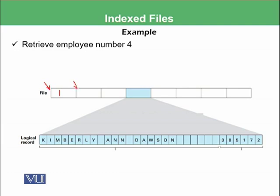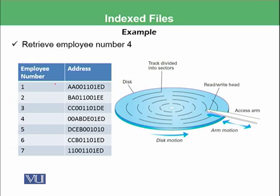We want the starting address of where each record is stored. If we consider that all characters take 1 byte, and the first address starts at 1, then the next employee starts at 32, the next at 63, and so on. However, in real drives the address doesn't start from 1 — it is a hexadecimal or long address with multiple byte patterns, such as AA001101ED, where AA is the sector information and 00 is the track information.